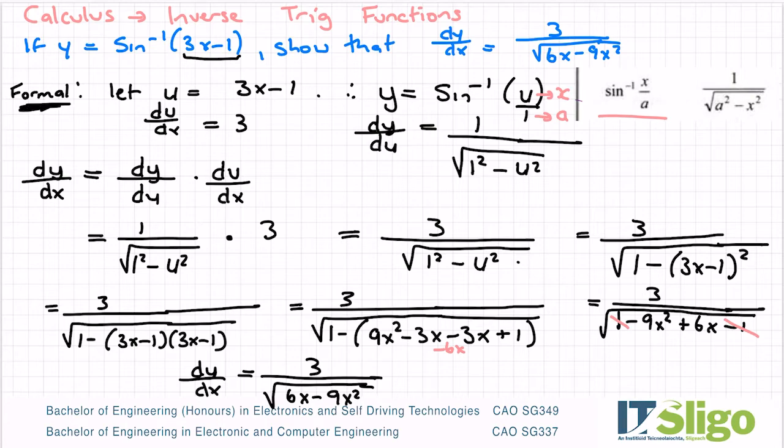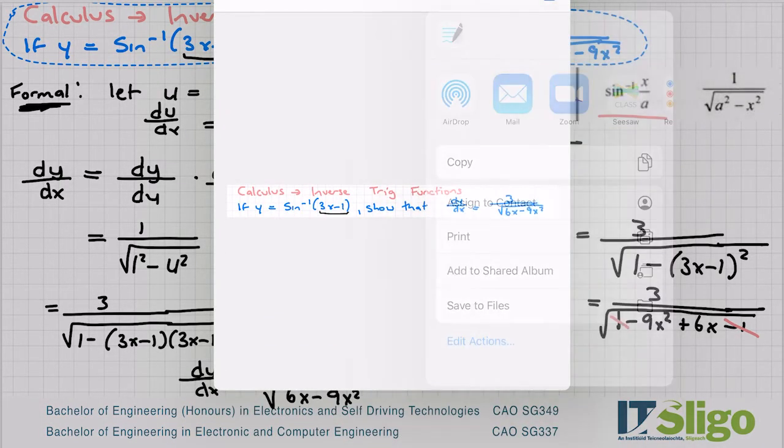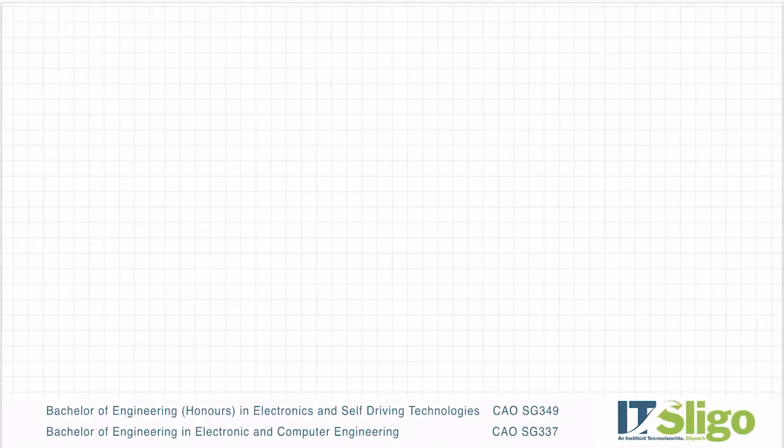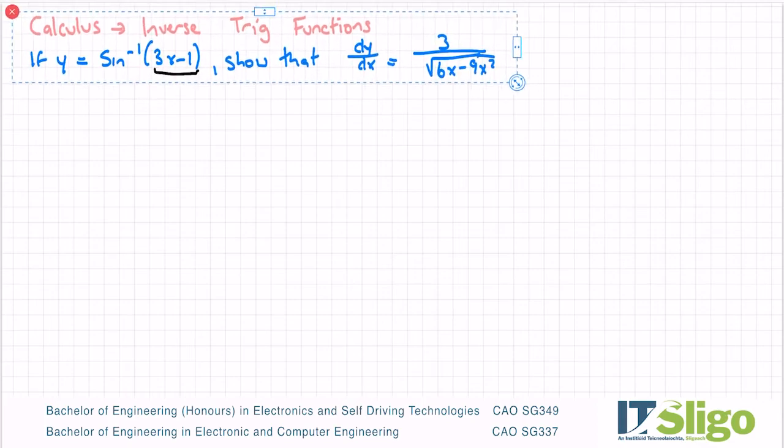So that's formally how you do calculus using this substitution method. And using this substitution method for you is really, really good when the questions are complicated. There's an informal way of doing it. And you might have done this with some of your chain rule questions. So let me just copy this now onto a new page. And let me do it informally.